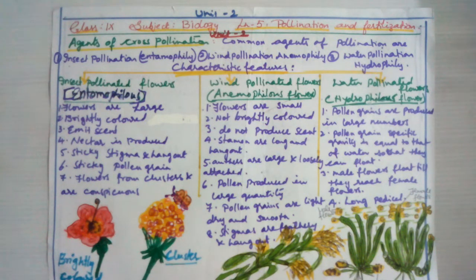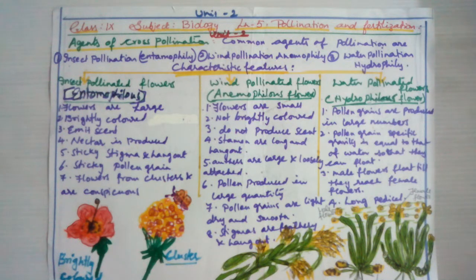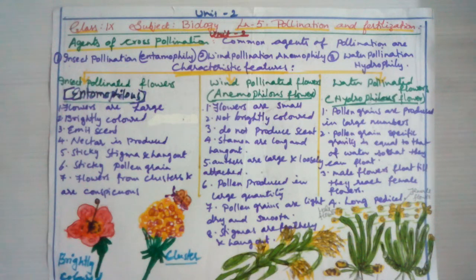Insect-pollinated flowers are also called entomophilous flowers. 'Entomo' means insect and 'phily' means affinity or attraction. Insect pollination is called entomophily. These flowers are usually large and brightly colored because they have to attract insects. They also emit scent to attract insects — like jasmine with its nice odor.